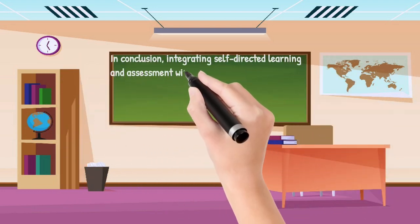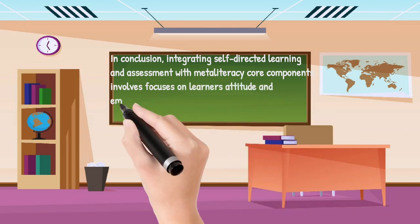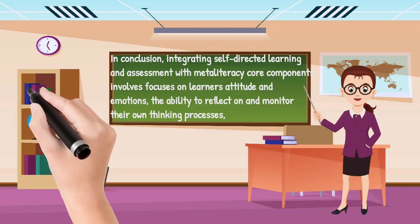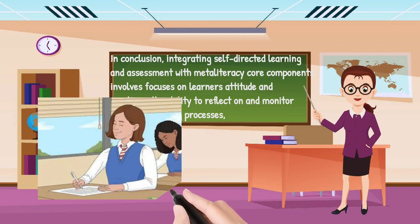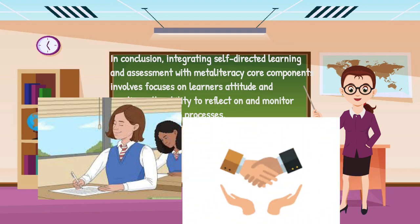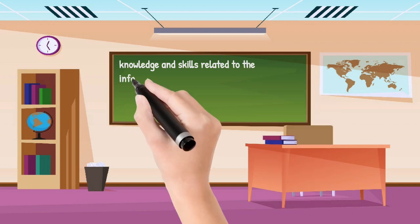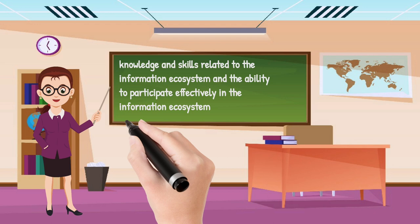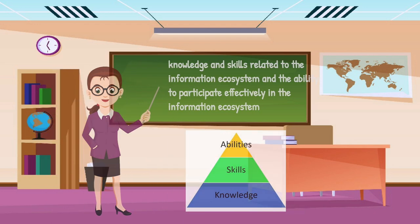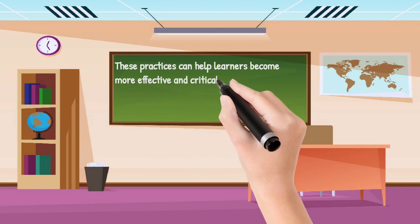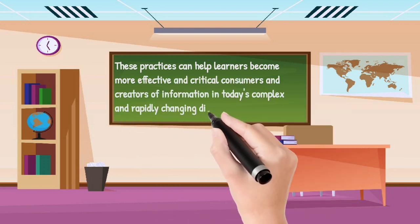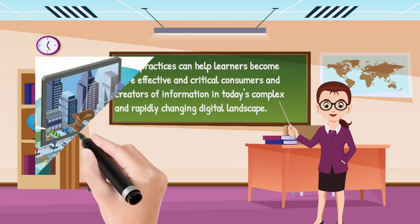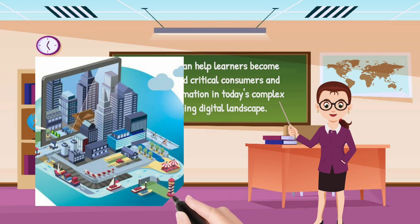In conclusion, integrating self-directed learning and assessment with meta literacy core components involves focuses on learners' attitude and emotions, the ability to reflect on and monitor their own thinking processes, knowledge and skills related to the information ecosystem, and the ability to participate effectively in the information ecosystem. These practices can help learners become more effective and critical consumers and creators of information in today's complex and rapidly changing digital landscape.